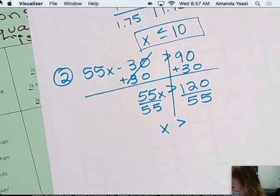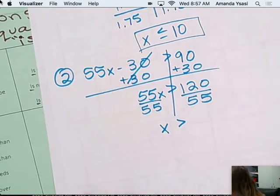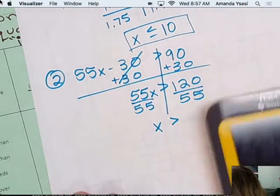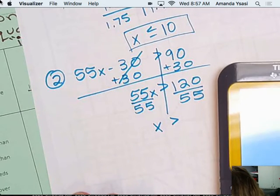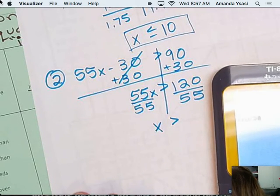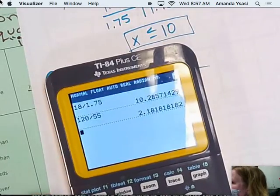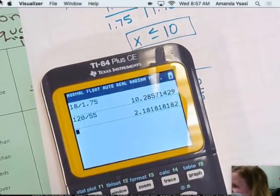120 divided by 55 is? How about 2.183? Or 2.183? But this is talking about how much you should charge. Oh, so $2. $2.18. That's exactly right.